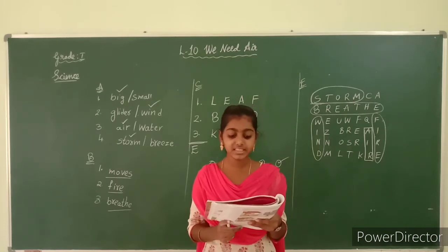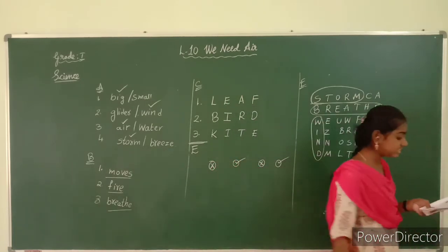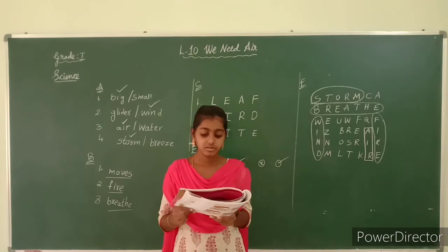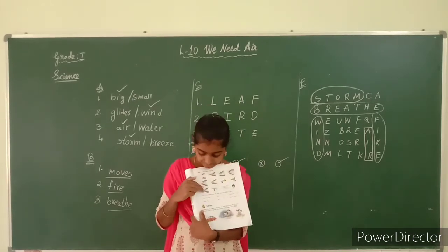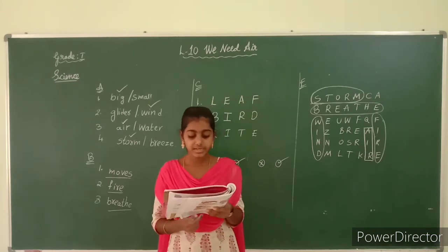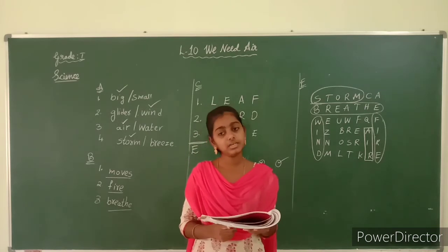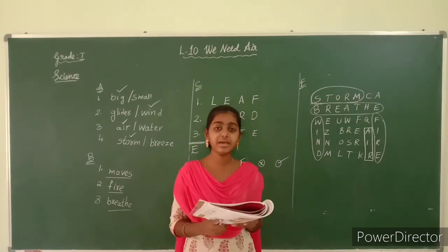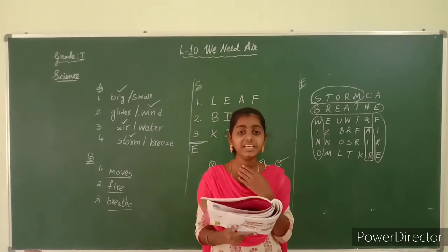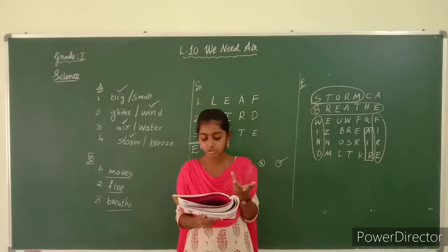Exercise J. Tick the things that can move when you blow at them. First one: a piece of paper — paper can move, yes. Next: a book — can a book move? No. A cotton ball — yes. Fourth one: a teddy bear — no. Fifth one: a leaf — yes, a leaf can move. And a glass of water — no, it cannot move.